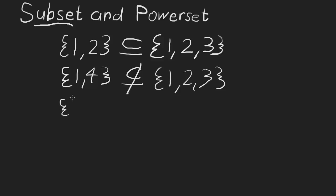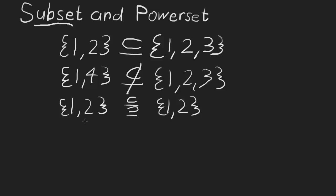What if we had the set {1, 2} and the set {1, 2}? Every element in {1, 2} is also in {1, 2}, so this set is a subset of that set. And you could also go the other direction — every element in that set is also in this set. When two sets are both subsets of each other, they're called equal. So we say the set containing 1 and 2 is equal to the set containing 1 and 2.